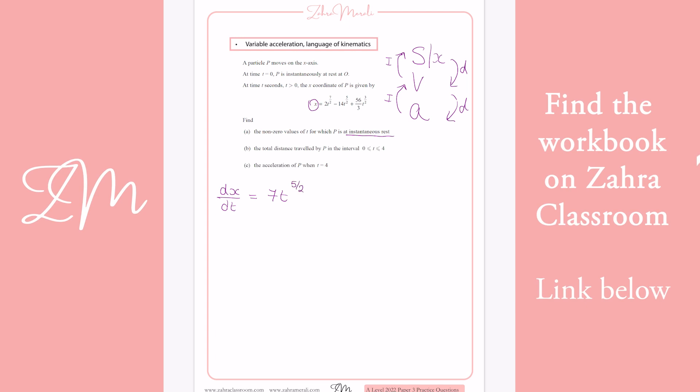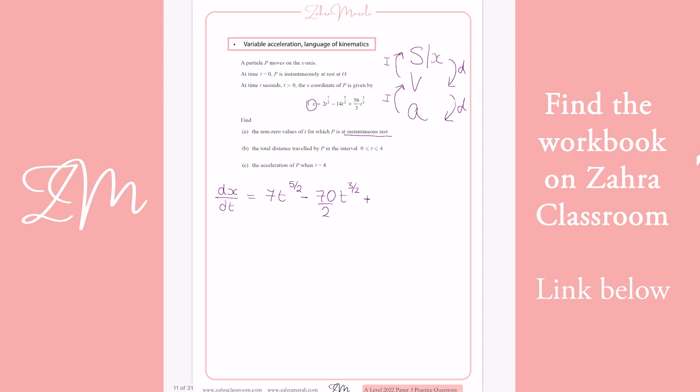So you're going to get 7t to the power of 5/2. And then you can bring the next one down and you're going to get 14 times by 5 to give you 70. So you're going to get 70/2, so 35, t to the 3/2. And then you've got 56/3 times by 3/2, which is going to give you 28, and that's going to be t to the power of a half.